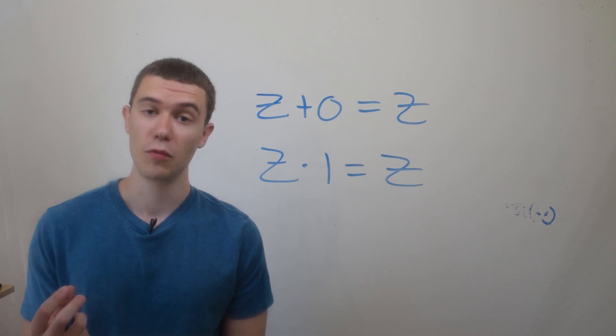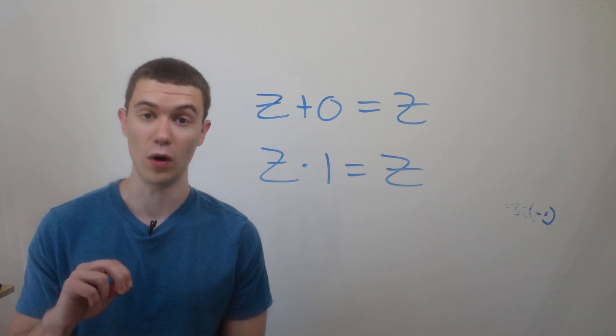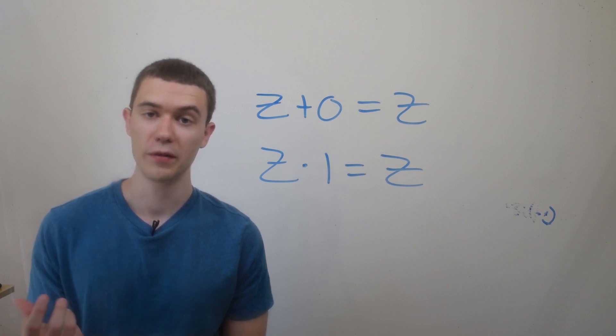There's two tiny more things I want to introduce here, and those are the additive identity 0 and the multiplicative identity 1. Just like they are for the real numbers, if I take any complex number and add 0 to it, it remains unchanged, it's the same number. And if I multiply any complex number by 1, it's still the same complex number.